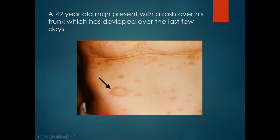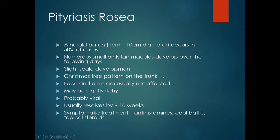A 49 year old man presents with a rash over his trunk which has developed over the last few days. This is a salmon-pink type rash, on the trunk in a fir tree type appearance, and may or may not have a preceding herald patch. This is pityriasis rosea, probably a viral condition which is self-limiting.